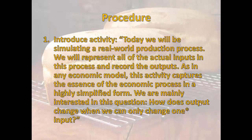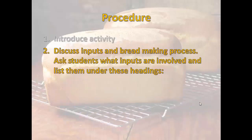To begin, introduce the activity to students as follows: Today we will be simulating a real-world production process. We will represent all of the actual inputs in this process and record the outputs. As in any economic model, this activity captures the essence of the economic process in a highly simplified form. We are mainly interested in this question: how does output change when we can only change one input? Ask students what's involved in the bread-making process — what inputs and procedures are involved — to create a comprehensive listing, categorized into raw materials, labor, capital, entrepreneurship, technology, the process itself, and the passage of time.